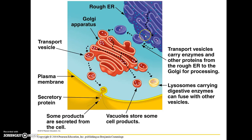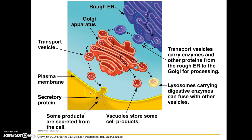This overview diagram covers everything just discussed — you can study it to cement these ideas. We have the rough ER studded with ribosomes, the Golgi apparatus, and the plasma membrane of the cell. Some products can be secreted from the cell, and we also have vacuoles that store cell products as well as lysosomes that carry digestive enzymes and fuse with other vesicles.